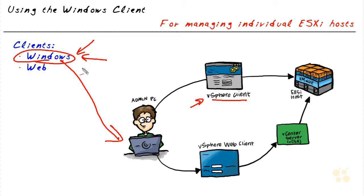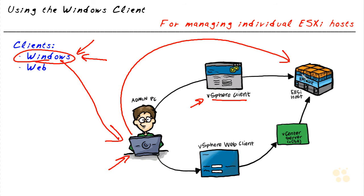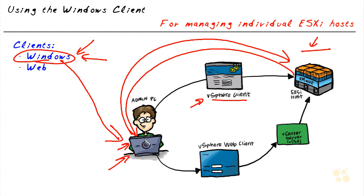The question might come up: where exactly do we get this Windows client? The answer is we could get it from two places. One, we could download it as part of the evaluation software from VMware. Or secondly, once an ESXi host is up and running and reachable on the network, we can open up a browser, connect to the ESXi host — that'll give us a link we can click on — and that will allow us to download the application and install it on our local PC.